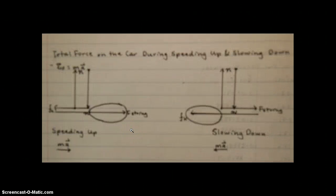Total force on the car during the time when it is both speeding up and slowing down. So the formula for this is the sum of the forces equals Ma. And to do this, we would use the mass of the car times the acceleration of the car when it is speeding up, and the acceleration of the car when it is slowing down to find the respective net forces.